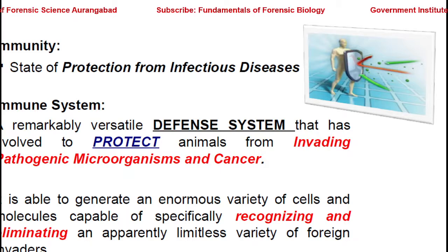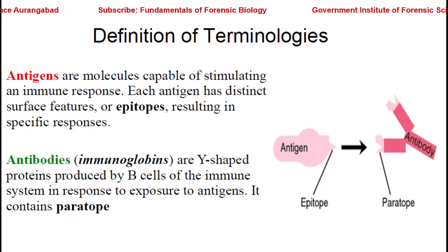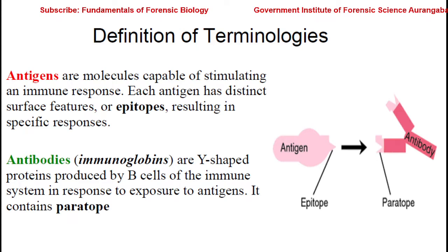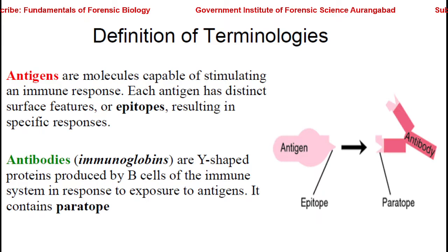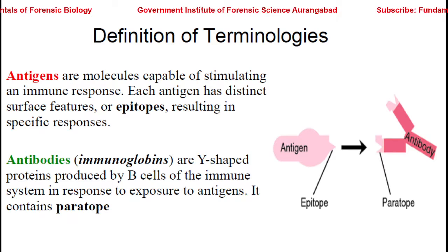Now the terminologies used in immunology: Antigens are molecules capable of stimulating an immune response. When it provokes an immune response in a true sense, we call it an immunogen, but an antigen is any foreign particle that stimulates the immune response. Each antigen has distinct surface features called epitopes, resulting in a specific response.